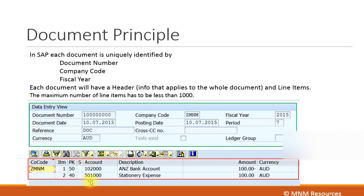The red box indicates the document line items. For this document, there are two line items. Each document must have at least two line items — one for a debit and one for a credit. There can be as many line items as you want in a document, but a maximum of 999. In other words, there must be less than 1000 line items in a document.